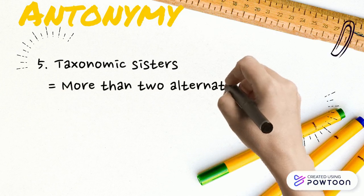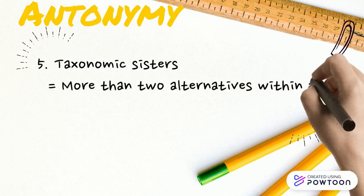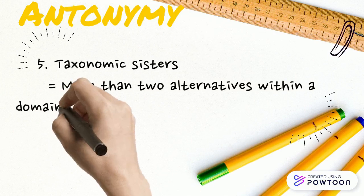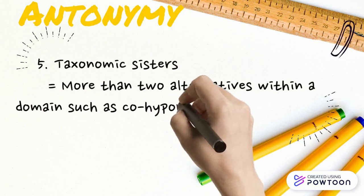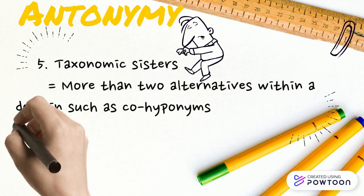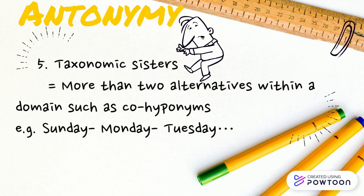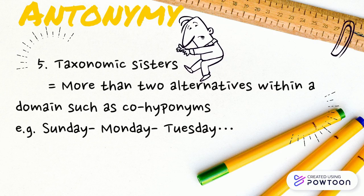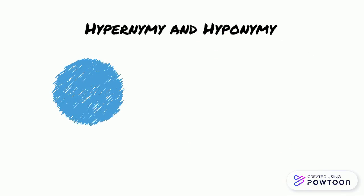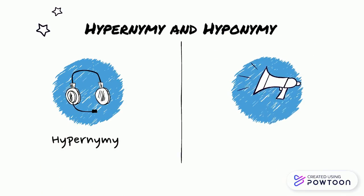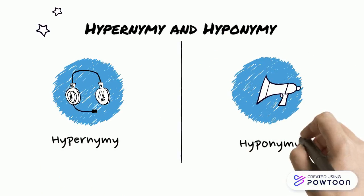And the last one is taxonomic sisters — more than two alternatives within a domain, such as co-hyponyms, for example, Sunday, Monday, or Tuesday.